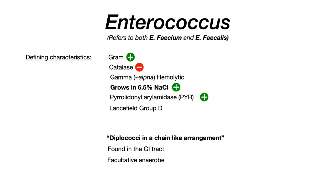Enterococcus faecium and enterococcus faecalis are gram-positive, catalase-negative, gamma-hemolytic species that grow in 6.5% salt — which is very important to differentiate them from non-enterococcus. These are PYR-positive and Lancefield Group D pathogens. The microscopic description is diplococci in a chain-like arrangement. These pathogens are found natively in the GI tract, hence the names faecium and faecalis — think feces, or poop. They are facultative anaerobes.